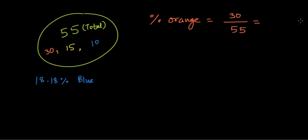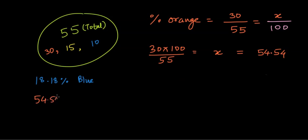Now when we need to convert it into percentage, we need to write 100 in the denominator and let's just write X for the percentage of orange balls. We cross multiply and we get 30 times 100 divided by 55 to be equal to X. And so once we solve this, we get X is equal to 54.54. And so the percentage of orange balls in the bag is 54.54%.